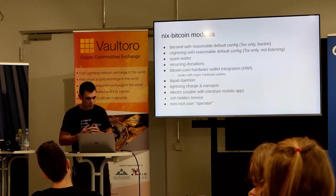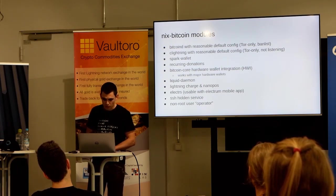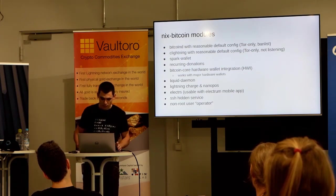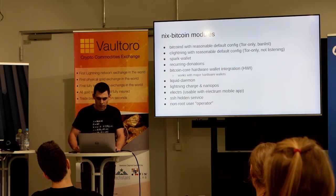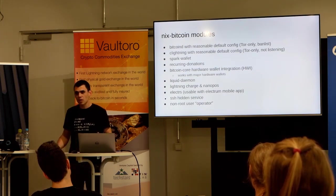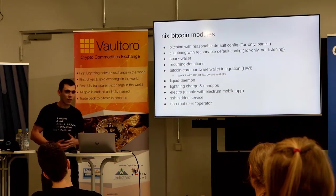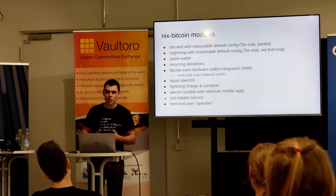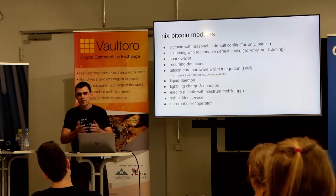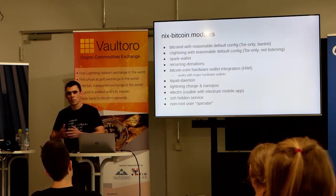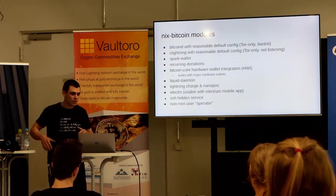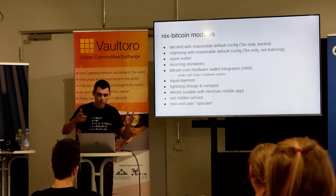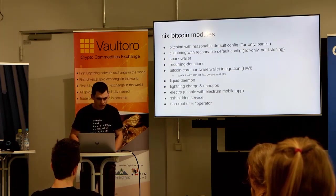There's also Nanoposs, which is a point-of-sale system. Electrs, which is a Rust implementation of the Electrum personal server — it's also usable with the Electrum mobile app. There's an SSH hidden service which allows you to SSH into your system from anywhere. And there's a non-root user operator which has access to all of this, because since all the services operate under their own user, it would be very laborious to always switch users just to use Bitcoin or Lightning separately.